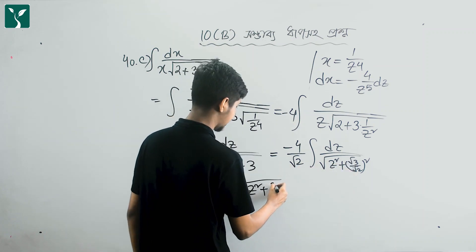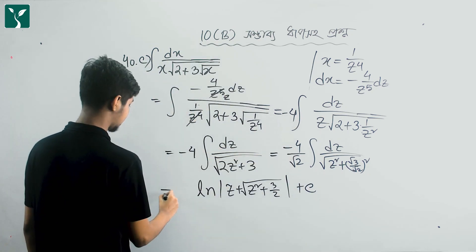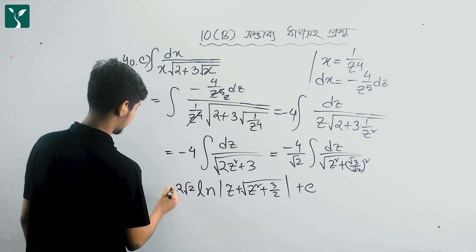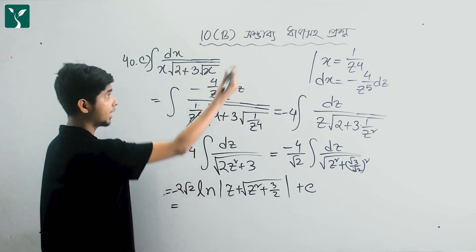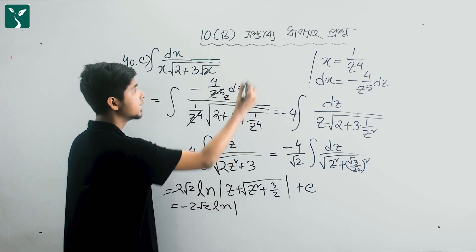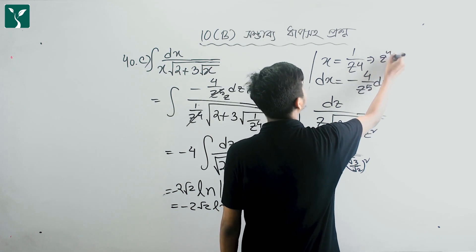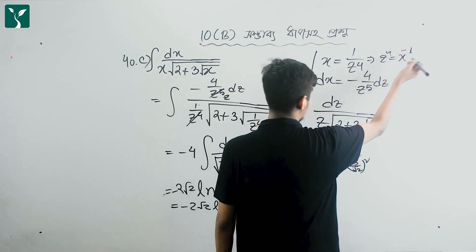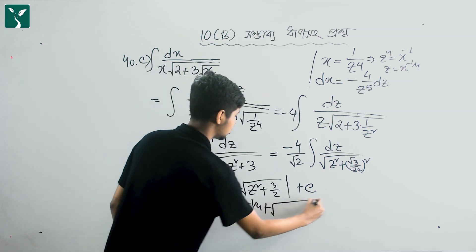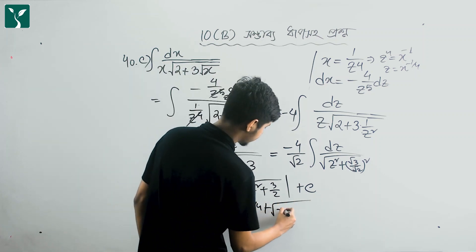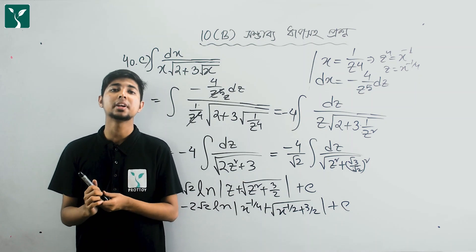So this is z square plus 3 by 2 plus C, times minus 4 root 2 by 2, which gives minus 2 root 2. Now substituting back: z means x to the power minus 1 by 4. So the final answer is: minus 2 root 2 times ln of x to the power minus 1 by 4 plus root over x to the power minus 1 by 4 whole square, that is x to the power minus half, plus 3 by 2, plus C. And that is the solution to the problem.